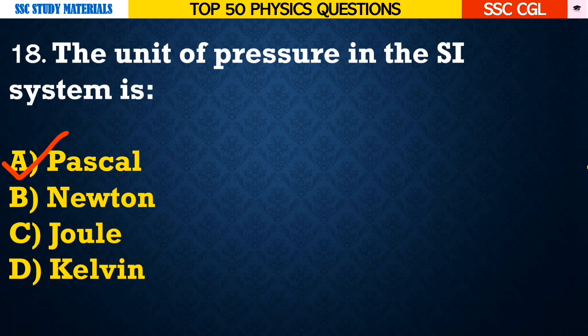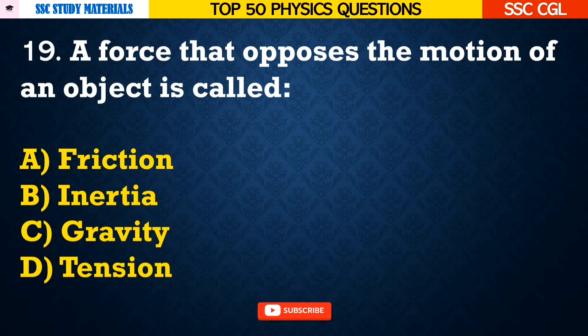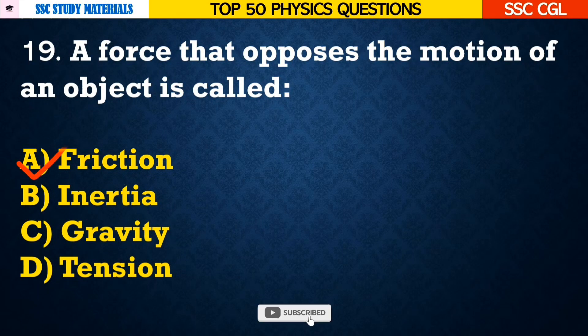Question number 19: A force that opposes the motion of an object is called — Answer A. It is called friction.